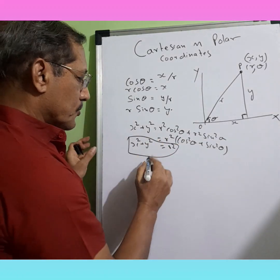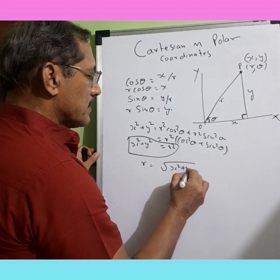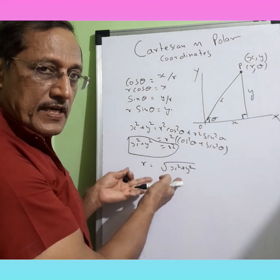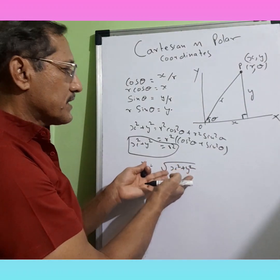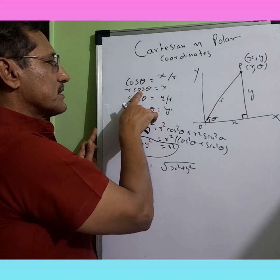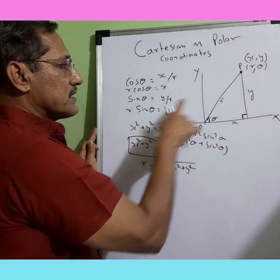Obviously if we take root, so R would be equal to root of X square plus Y square. So if we intend to find radius, this is what we can do with Cartesian coordinates. And for the points X and Y, we can use X equals R cos theta and Y equals R sin theta.